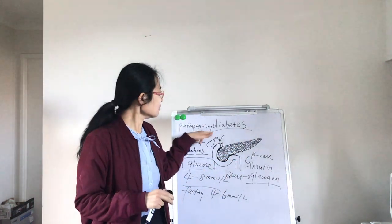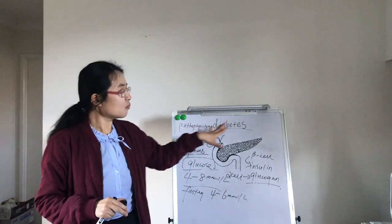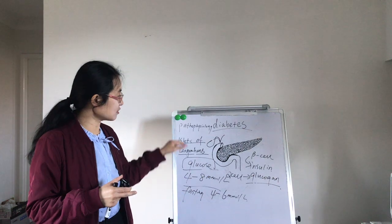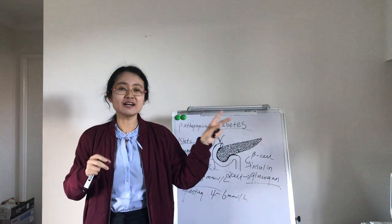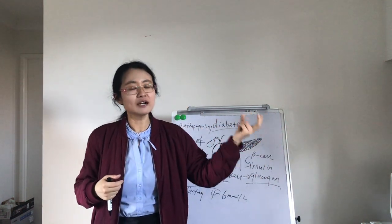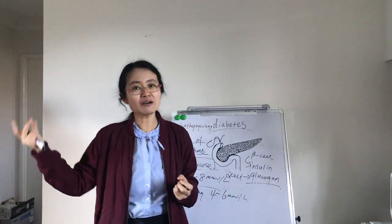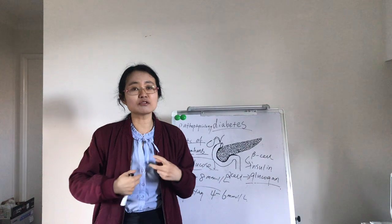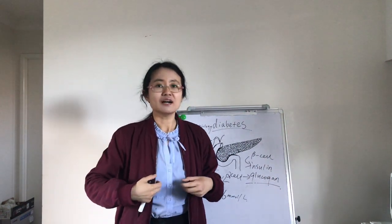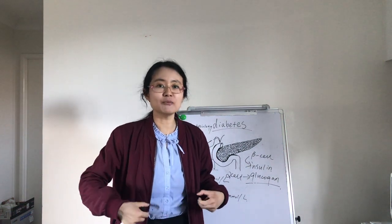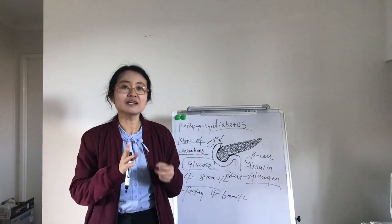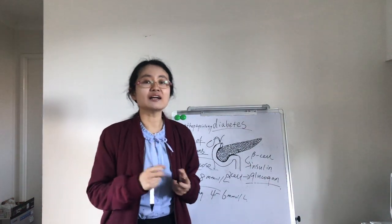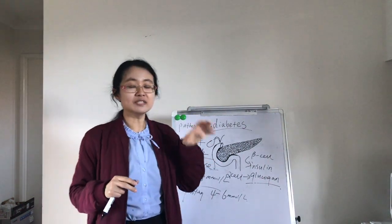We're going to talk about the pathophysiology, causes, and relevant nursing treatments. Pathophysiology means what actually happens in the body to cause this condition. Once we consume food, there are different types of nutrition: fat, protein, sugar, and carbohydrate. Carbohydrate, once digested, can convert into sugar, so sugar is the main resource of energy for the body. The sugar, once digested, is absorbed into the blood from the small intestine, carried in the blood, and then shifted into body cells to produce energy.